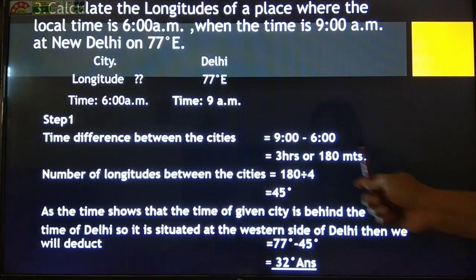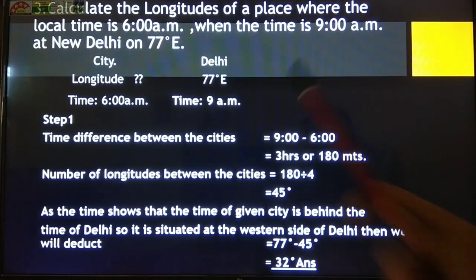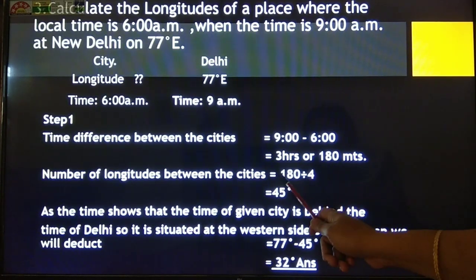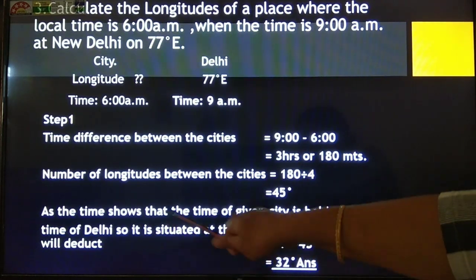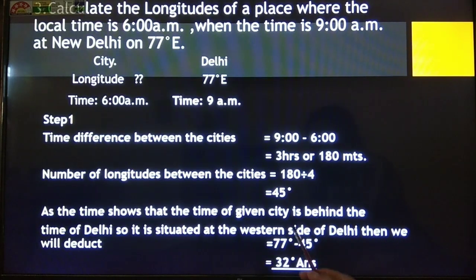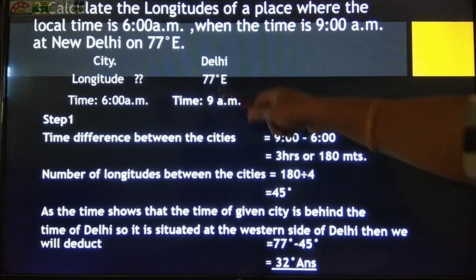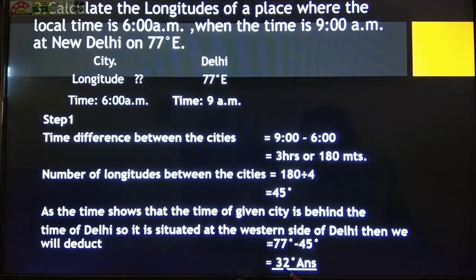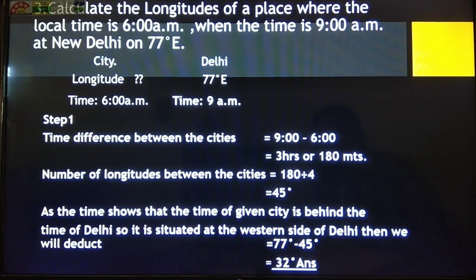9 minus 6 gives a time difference of 3 hours, which converts to 180 minutes. Since the time difference between two longitudes is 4 minutes, we divide 180 by 4 to get 45 longitudes. Since the given city's time is behind Delhi's time, it is situated to the western side of Delhi. We subtract: 77 minus 45 gives us 32 degrees. So the given city is situated at 32 degrees longitude.